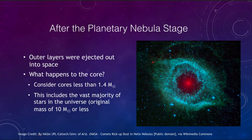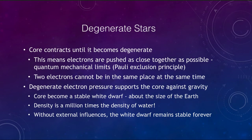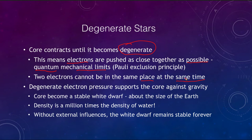We need to look at what we mean by a degenerate star. What happens in these cases is that the core contracts until it becomes degenerate. This means that the electrons in the atoms are pushed as close together as is possible — we are getting down to quantum mechanical limits. Two electrons simply cannot be in the same place at the same time, and this is often known as the Pauli exclusion principle. So you can only get electrons so close together.